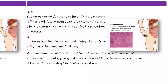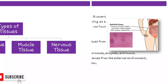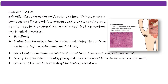The first one is epithelial tissue. These tissues form the body's outer and inner linings. They cover surfaces and line cavities, organs and glands, serving as a barrier against external harm while facilitating various physiological processes. Epithelial tissues form the body's outermost lining and protect our organs and glands from outside injuries.